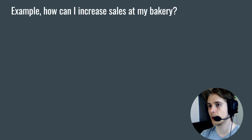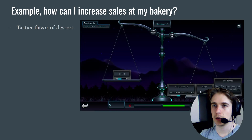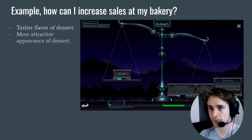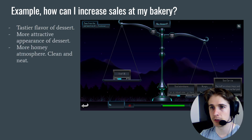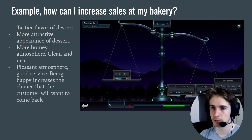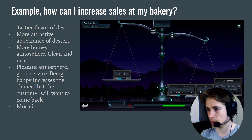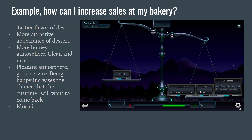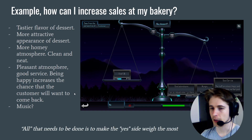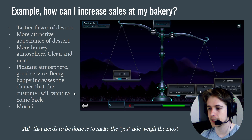Here is an example. How can I increase sales at my bakery? Maybe a tastier flavor or more attractive appearance of the desserts, a more homey atmosphere, clean and neat, pleasant atmosphere, good service — being happy increases the chance that the customer will want to come back — and maybe add some music. We can see it's from the perspective of the customer: should he buy the dessert, yes or no? The drawback is it costs five dollars, but as we can see the benefits are so huge that he still goes ahead and does it. All that is needed is to make the yes side weigh the most.